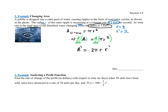Now that we have the derivative, they want to know at what rate the area is changing — they want A'. They've given us r = 3 and r' = 2, so we plug those in: A' = 2π times r (which is 3) times r' (which is 2). That gives us 2 × 3 = 6, and 6 × 2 = 12, so A' = 12π.